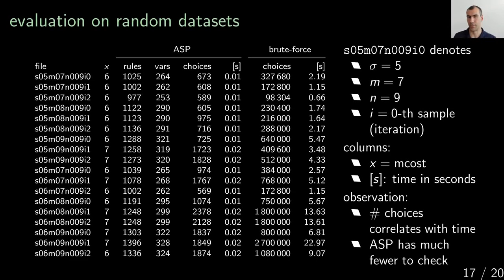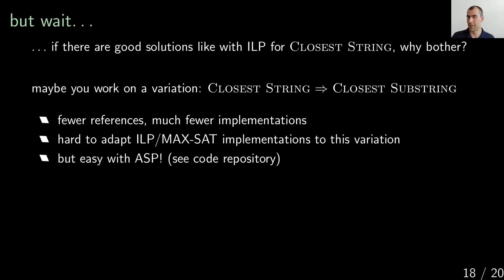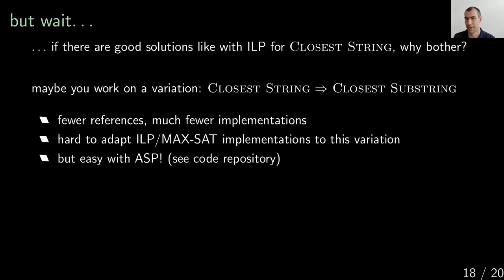Does this mean it's nice to use ASP? But wait — there are already solutions using integer linear programming for solving Closest String. Why bother? Well, maybe you don't have exactly that problem: if you work on a related problem like Closest Substring, there are fewer references and much fewer implementations. ILP or MaxSAT code is hard to adapt, but it's very easy if you have ASP code. Look at my code repository — the code for Closest Substring is very similar to Closest String.